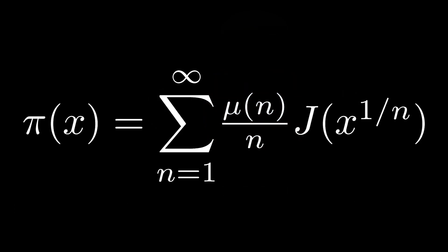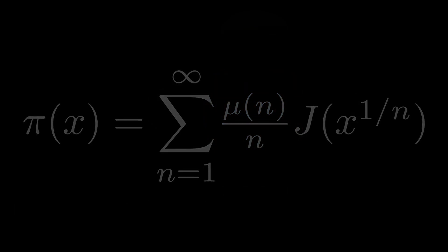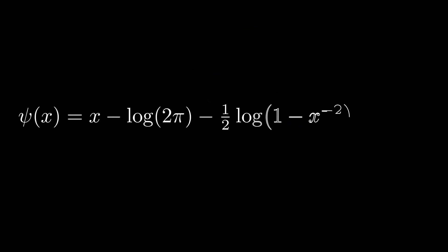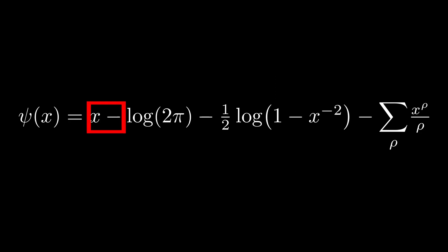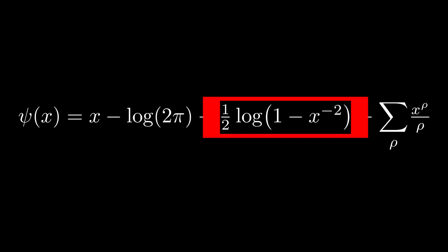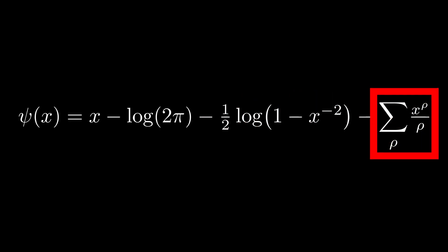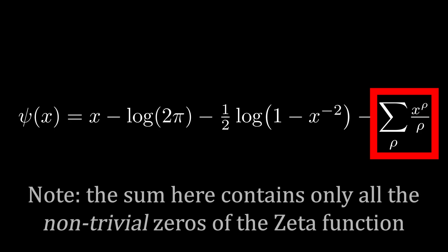Well it turns out, there's an incredibly simple formula for something called the Chebyshev function, which I'll denote as ψ of x, which doesn't require any knowledge of prime numbers. ψ of x is equal to x minus log of 2π minus half of log of 1 minus x to the minus 2 minus this sum containing all roots of the Riemann zeta function.